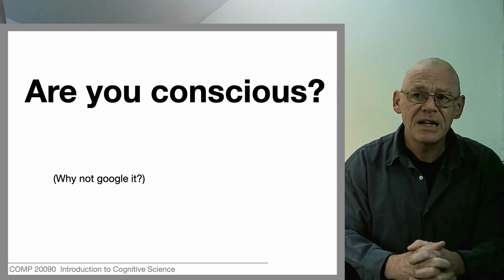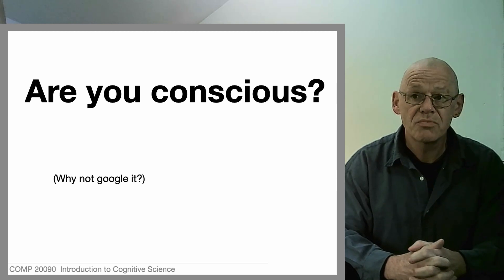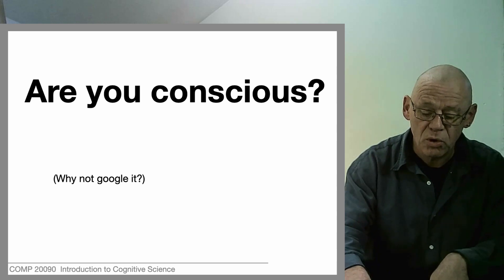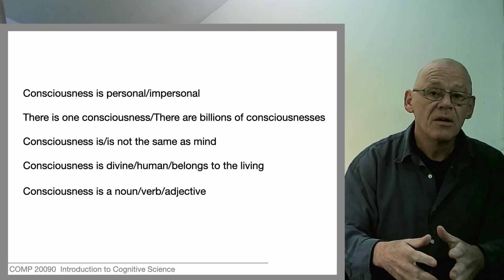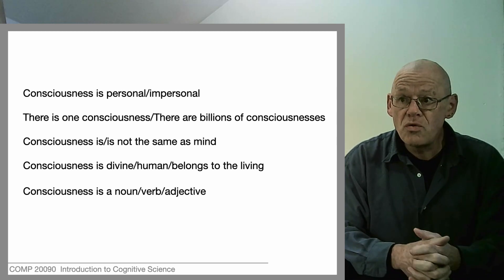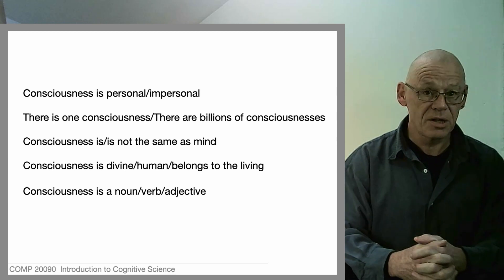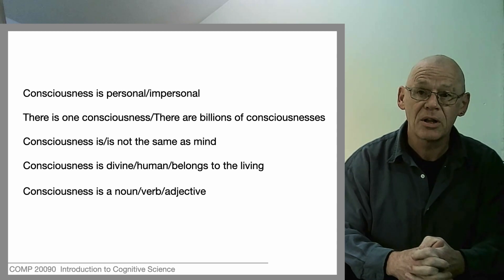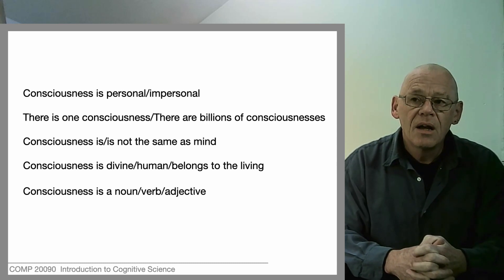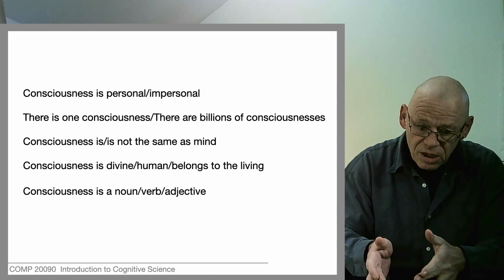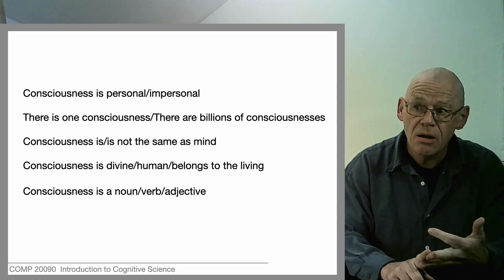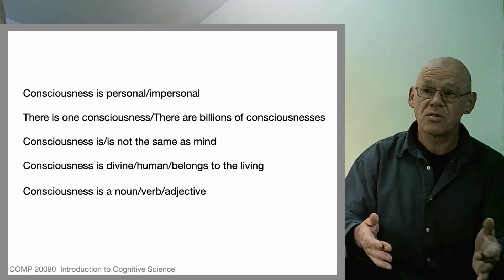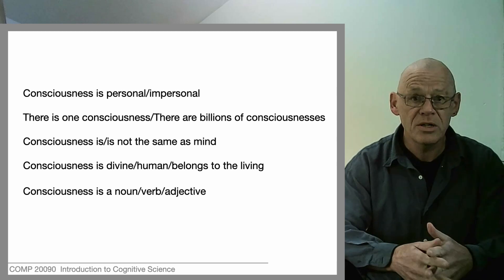The word, as used by different communities of scholars, practitioners, and everyday folk, means very many things, and we're going to explore lots of those here. You may assume that consciousness is personal, but we'll find that there are also impersonal views of consciousness in which it doesn't belong to a first person. You may say 'I'm conscious, my dog is conscious, my mother is conscious' — that's three, and there are probably billions of others, so there are billions of consciousnesses. Or you may say there's only one consciousness. Both are possible ways to understand that word.